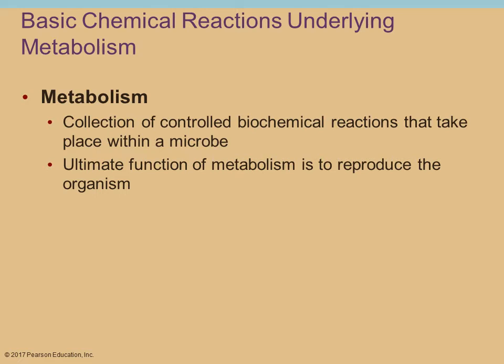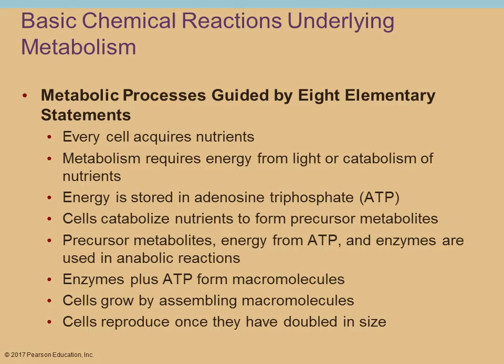There are different principles that metabolic processes usually follow. Every cell requires nutrients for survival. Metabolism requires energy, and it has to get that energy from someplace — either from light or from the breakdown of nutrients. Energy is going to be stored in the form of ATP, which is adenosine triphosphate.